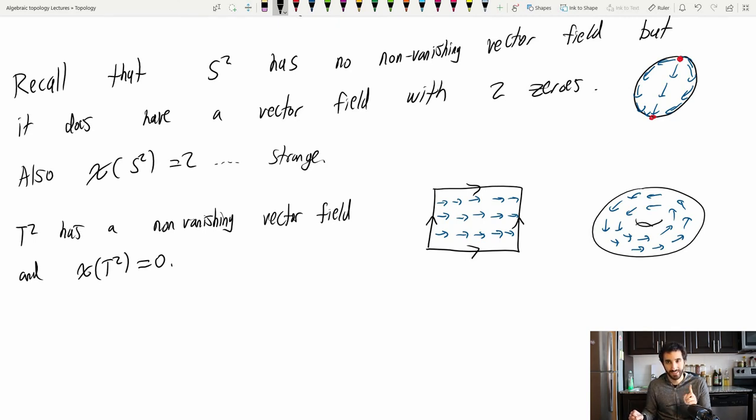So this is a vector field with no zeros. And the Euler characteristic of T2 is equal to zero. So there seems to be a pattern here, which is too consistent to ignore. So let's try to articulate what exactly what's going on. And to do that, we're going to need a couple definitions and a nice theorem.